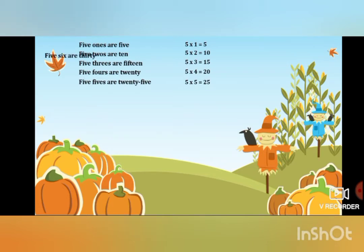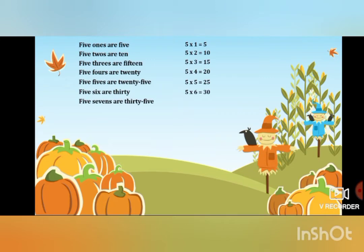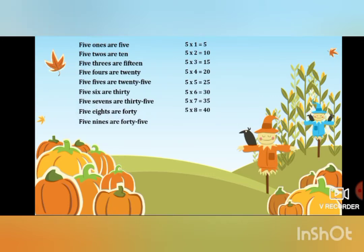Five sixes are 30, so 5 multiplied by 6 is equal to 30. Five sevens are 35, so 5 multiplied by 7 is equal to 35. Five eights are 40, so 5 multiplied by 8 is equal to 40. Five nines are 45, so 5 multiplied by 9 is equal to 45. Five tens are 50, so 5 multiplied by 10 is equal to 50. So we have done our tables in words as well as in numbers.